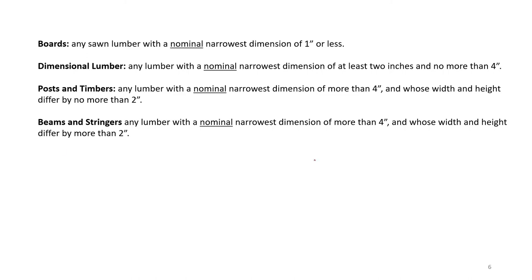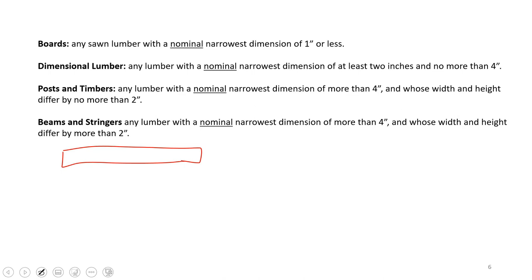Posts and timbers are any lumber with a nominal narrowest dimension of more than four inches and whose width and height differ by no more than two inches. Beams and stringers are sawn lumber with a nominal narrowest dimension of more than four inches and whose width and height differ by more than two inches. Boards are going to be very thin, wide flat elements — you might have a nominal dimension of one inch (actual around three-quarters inch) and a width of four, six, eight, or twelve inches. The reason for these categories is that there are certain NDS provisions that apply to certain types of sawn lumber and not others.